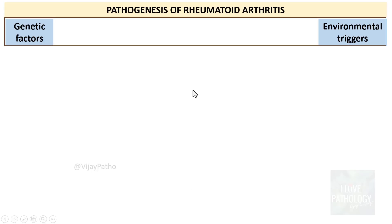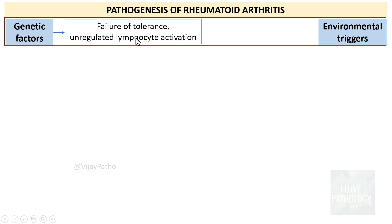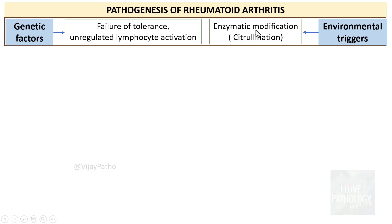Now let's look at the exact mechanism of joint damage in rheumatoid arthritis. Genetic factors lead to failure of tolerance or unregulated lymphocyte activation, while environmental triggers cause citrullination through enzymatic modification. In a genetically susceptible individual, these factors combine to drive T cell and B cell responses.